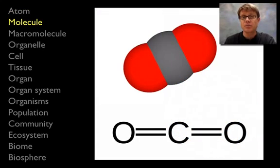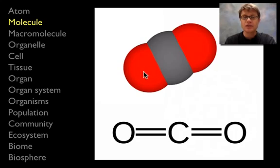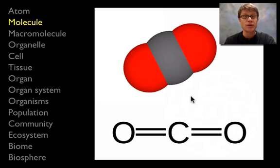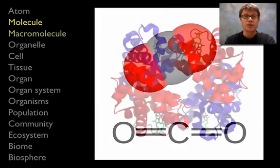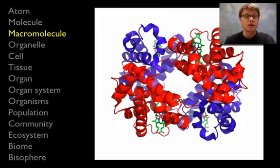If we go to the next level, that would be the molecule. Here's carbon again, but it's bonded to two oxygen atoms, so now it's carbon dioxide. What would be an emergent property? Well, it's more stable — it's sharing electrons and is now bonded. That is something we find in molecules.